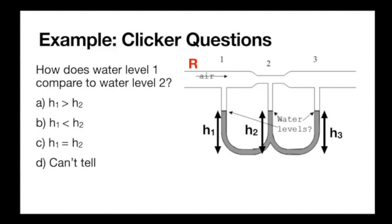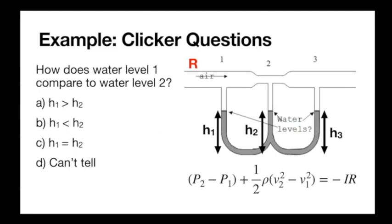Let's analyze between points 1 and 2. Between 1 and 2 we have a similar Bernoulli equation, except now there is a kinetic energy density change because we go from a wide pipe to a narrow pipe. We already know the minus IR term gives us a decrease — a loss in energy density. And since we're going from wide to narrow, speed increases, so kinetic energy density also increases. We're spending pressure both on the increase in kinetic energy density and on resistance loss. So the pressure is decreasing: P1 is greater than P2, and therefore H1 will be smaller than H2.